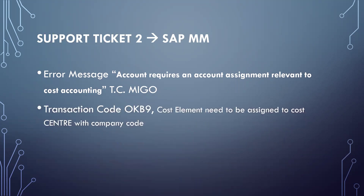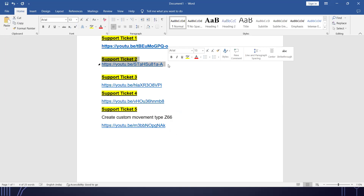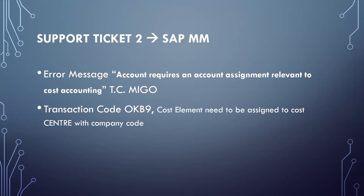To resolve this, the transaction code is OKB9. The cost element needs to be assigned to a cost center. This is the complete end-to-end support ticket, also logged in HP Quality Center. We have to make the necessary changes in OKB9.